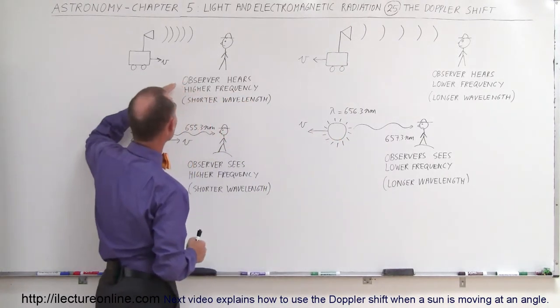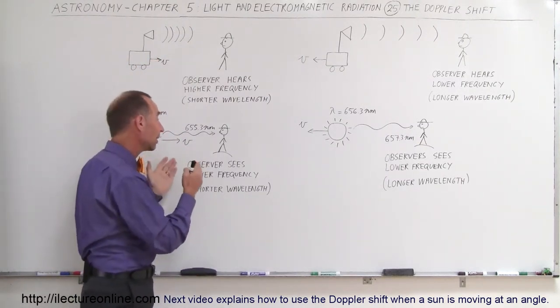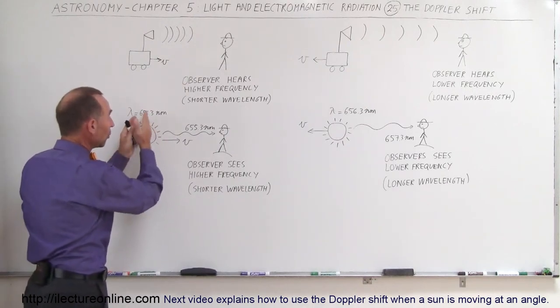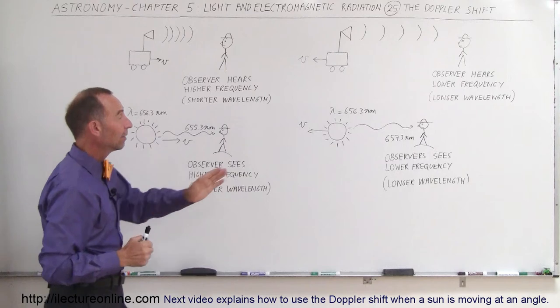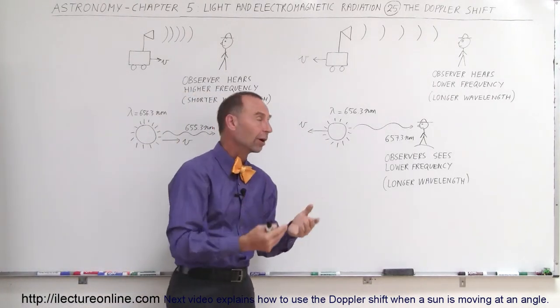Just like with sound, the faster the object is moving, the greater the shift, the greater the Doppler shift. And again, with light, it's the same thing. The faster the star is moving towards us, the more the wavelength will be shifted and the faster the star is moving away from us, again, the more the wavelength will be shifted in the opposite direction.